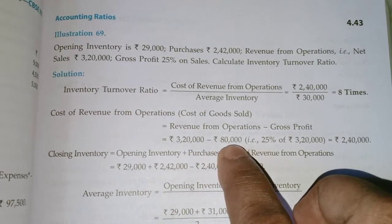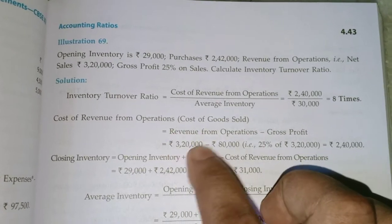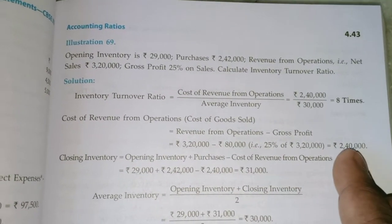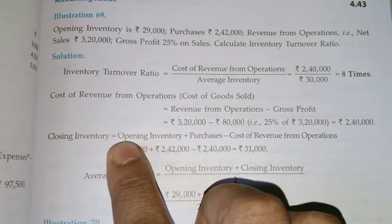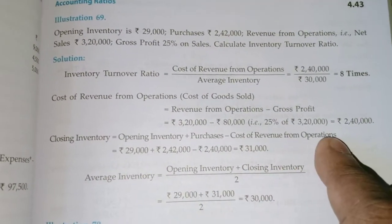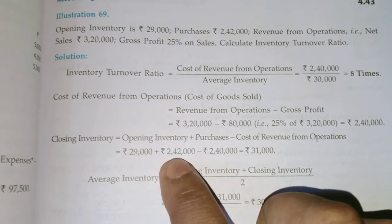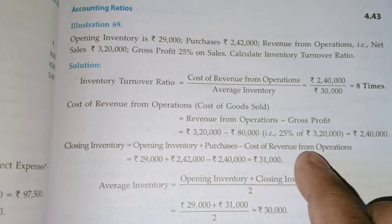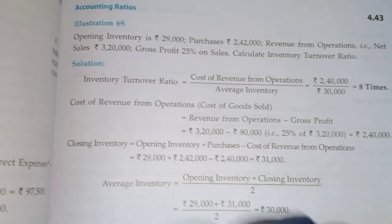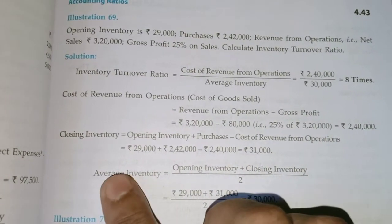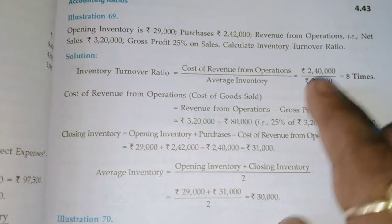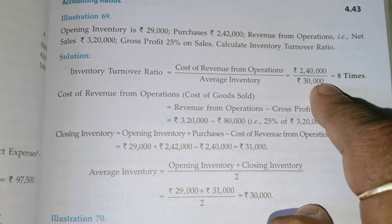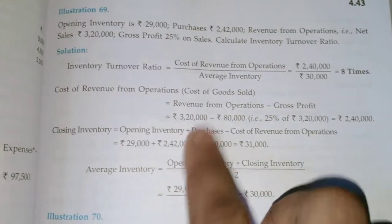Revenue from Operations is 3,20,000 and gross profit is 25% of 3,20,000 which is 80,000. So Cost of Revenue = 2,40,000. Average Inventory = (Opening + Closing) / 2 = (29,000 + 31,000) / 2 = 30,000. Inventory Turnover Ratio = 2,40,000 / 30,000 = 8 times.